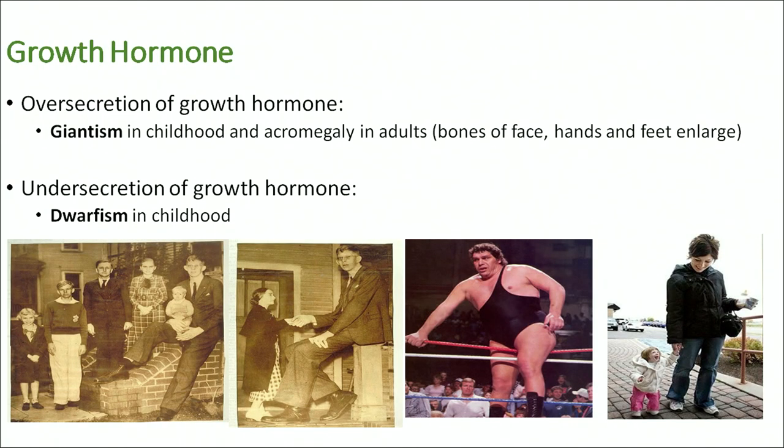Over-secretion of growth hormone causes giantism in childhood and can also affect adults, while under-secretion of growth hormone causes dwarfism in childhood. Growth hormone greatly affects development in animals.